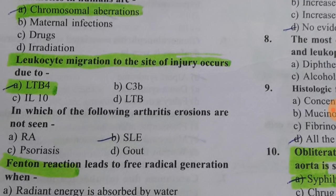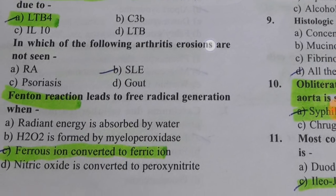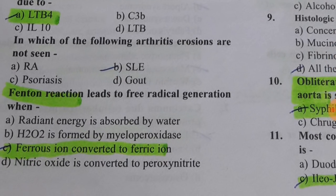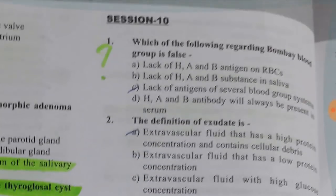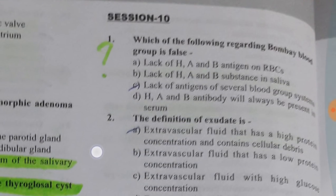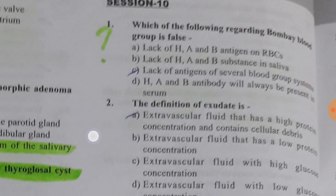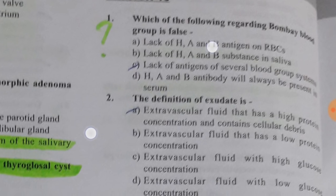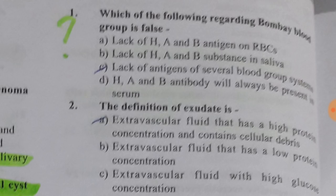In which of the following arthritis are erosions not seen? The answer is SLE. The Fenton reaction leads to free radical generation when ferrous ion is converted to ferric ion — know what the Fenton reaction is, it's important. Regarding the Bombay blood group, you need to understand the concept behind it.